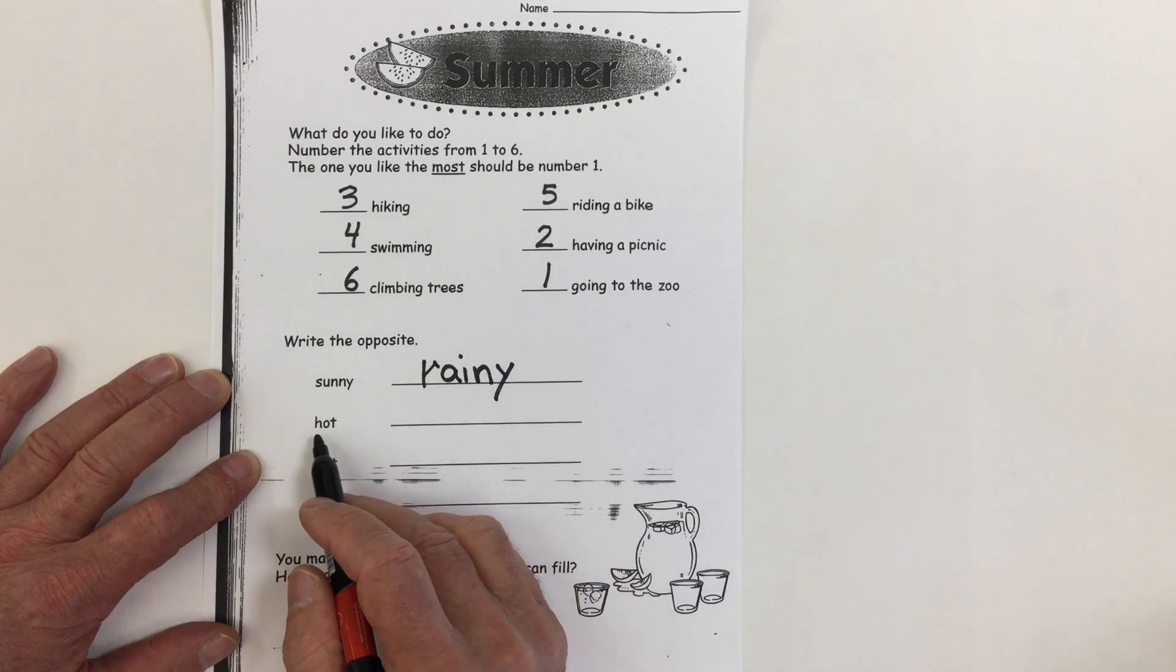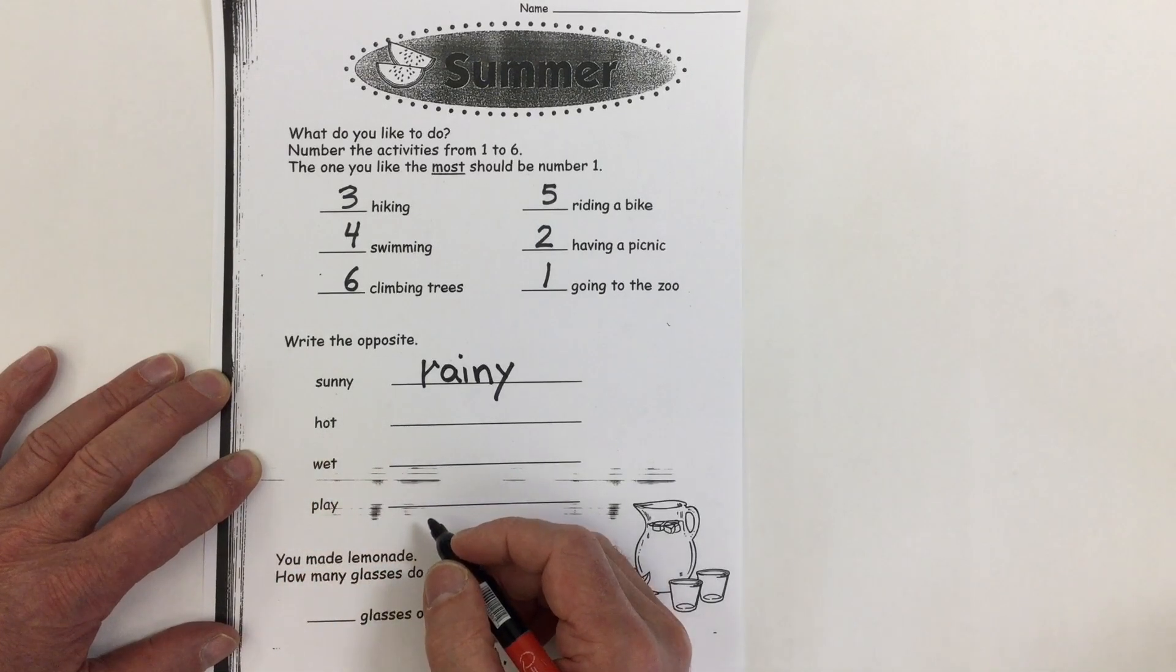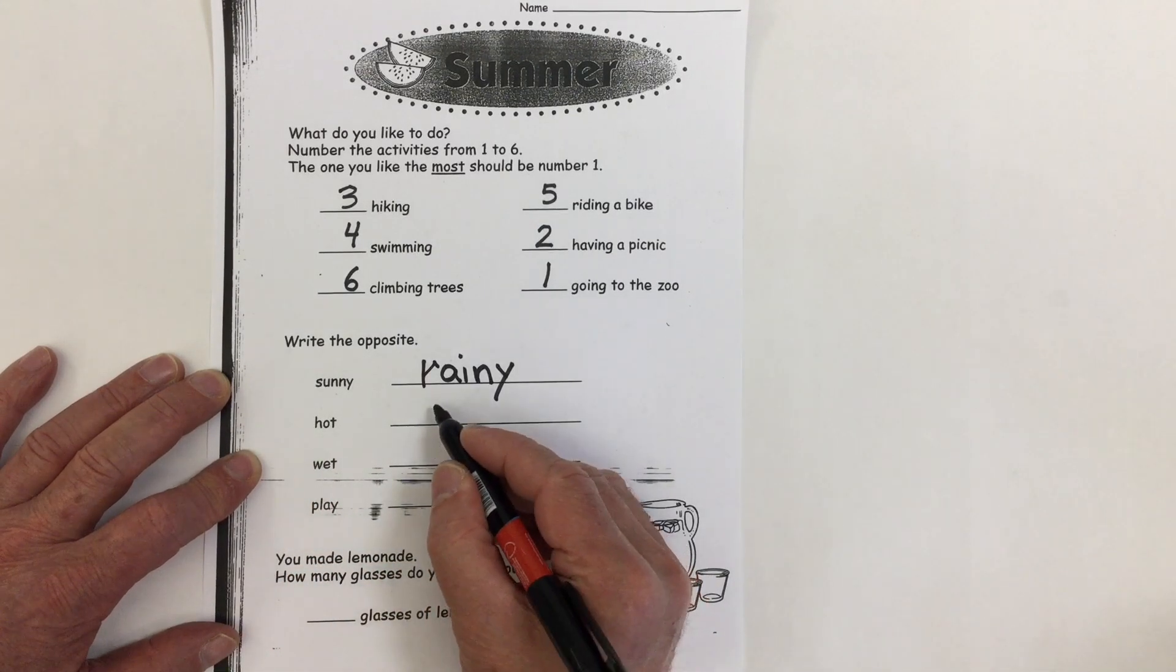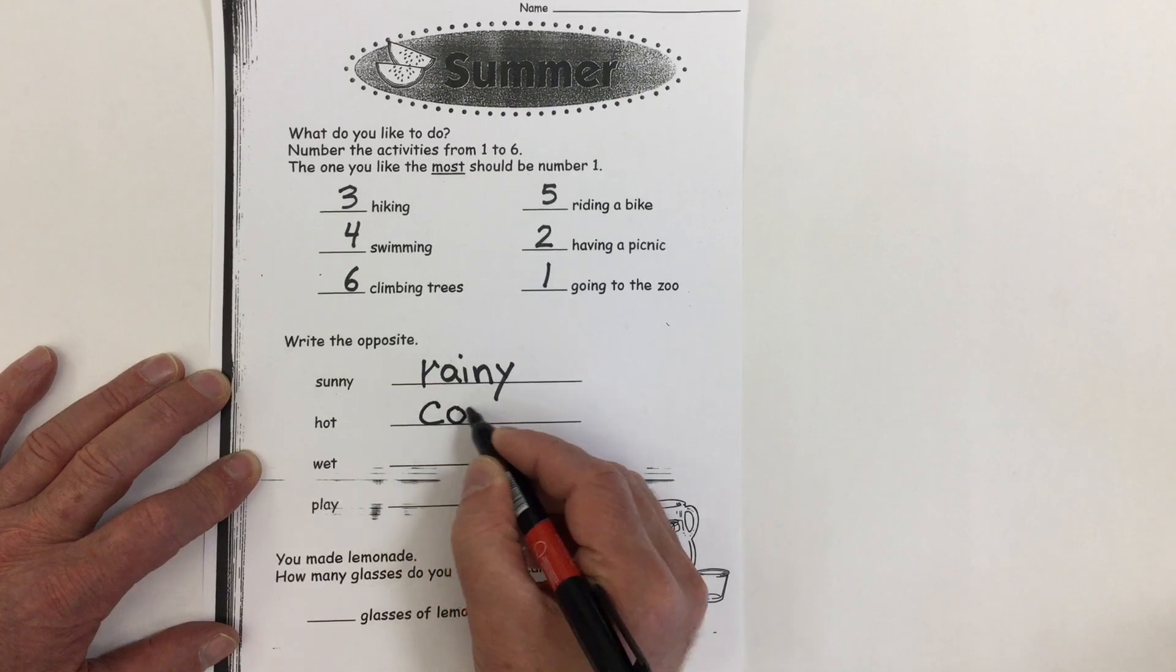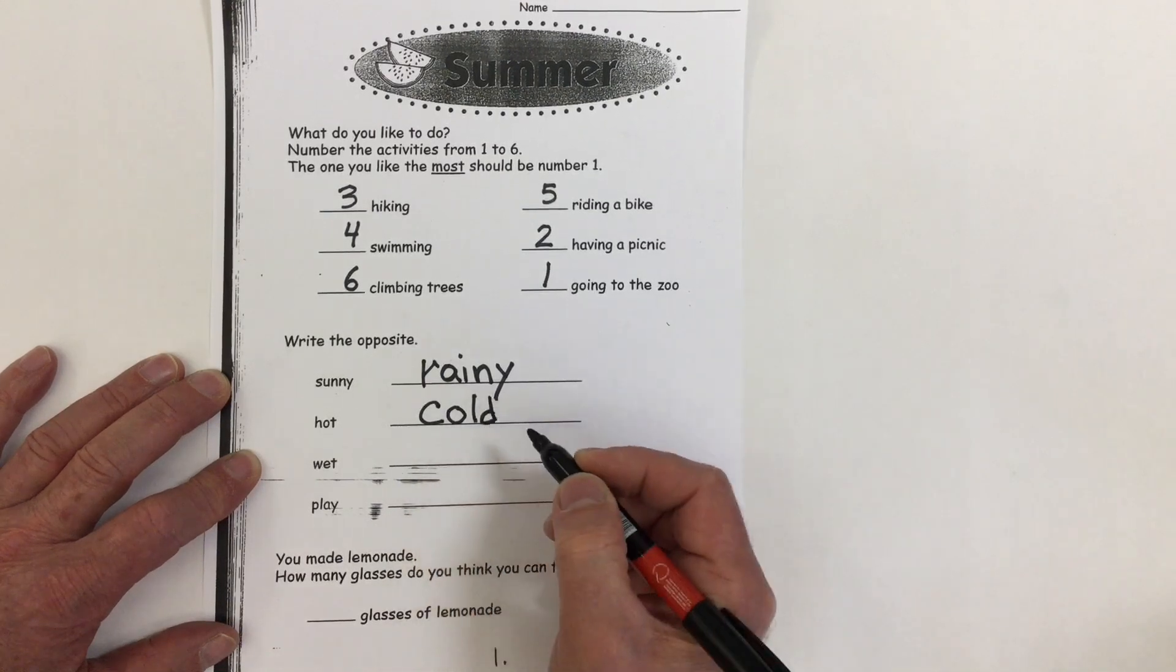What's the opposite of hot? Yeah, the opposite word is cold. C-O-L-D. Cold.